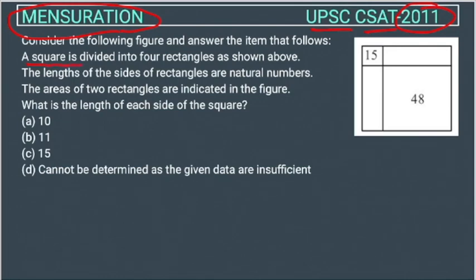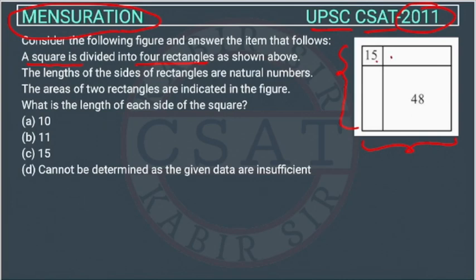A square is divided into four rectangles as shown. Since this is a square, all sides are equal. There are four rectangles — one, two, three, four. The lengths of the sides of the rectangles are natural numbers. The areas of two rectangles are indicated in the figure: 48 and 15. What is the length of each side of the square?